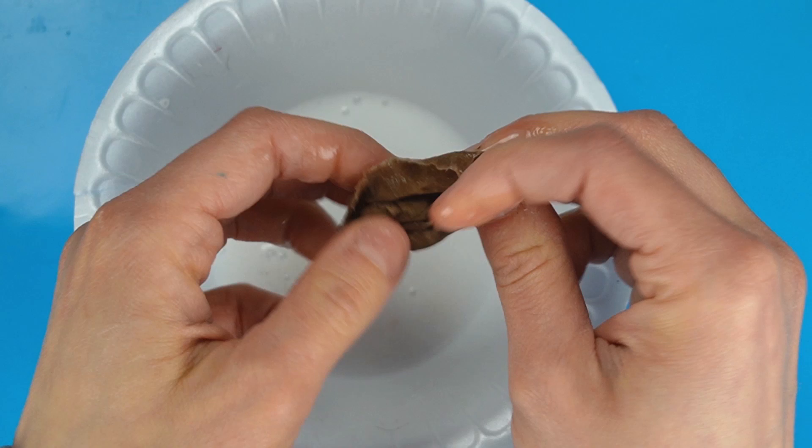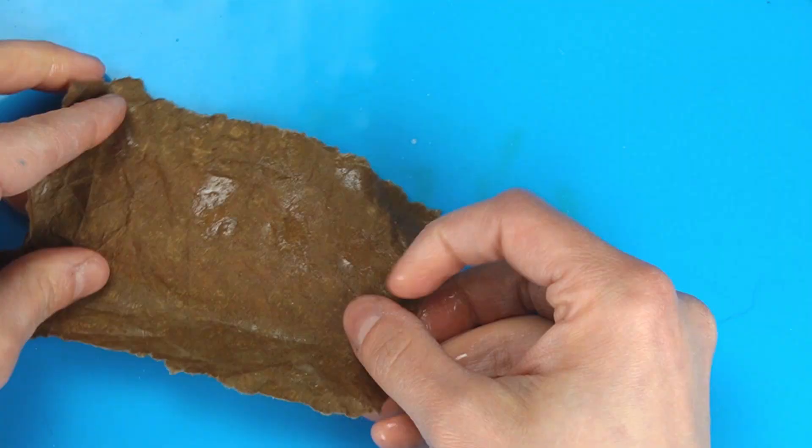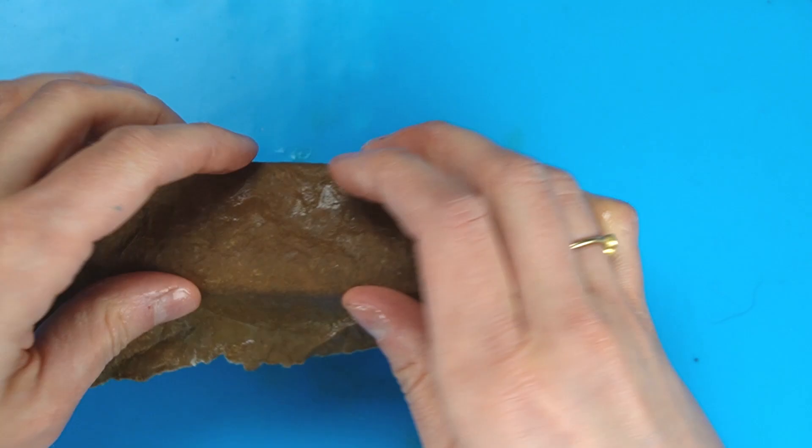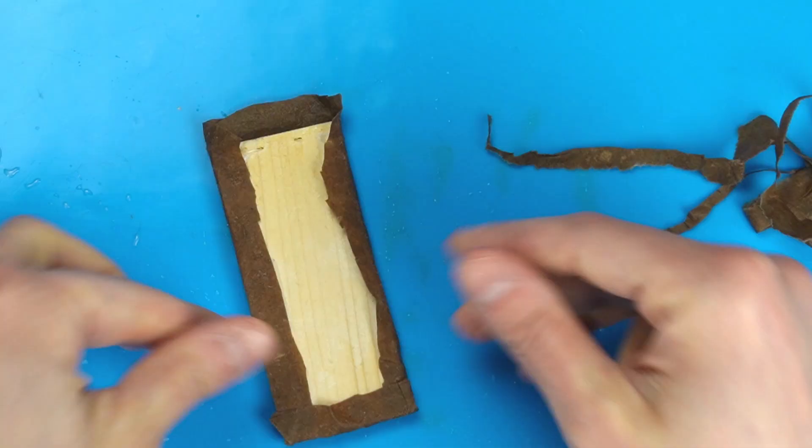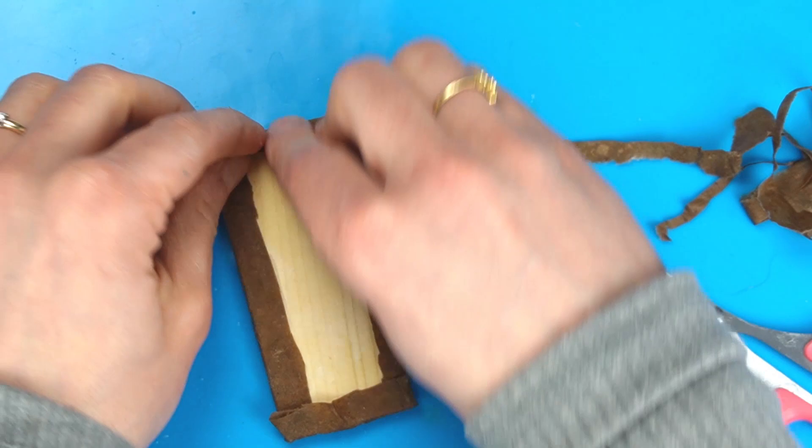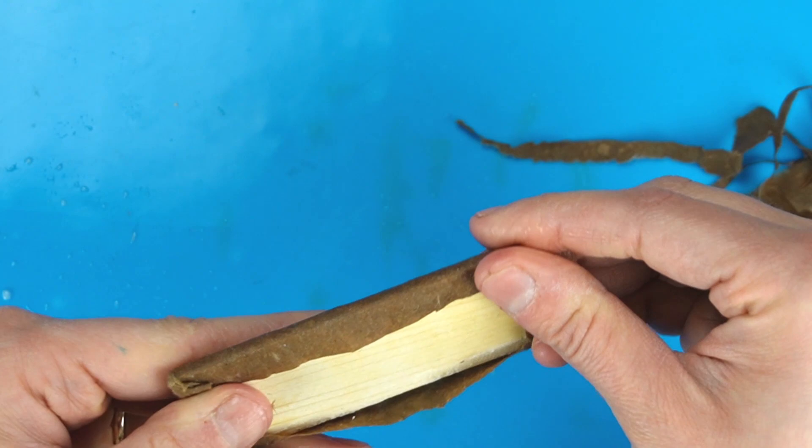Ringing out the excess helps it dry faster and also gives it more character by creating more lines. I draped the piece of paper over the table top and trimmed some of the excess. Then I folded in the sides so the paper will dry wrapped around the edges and will look more natural when I glue it later.